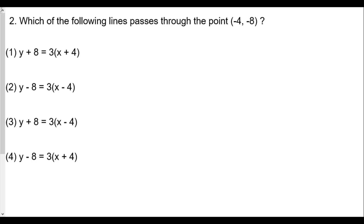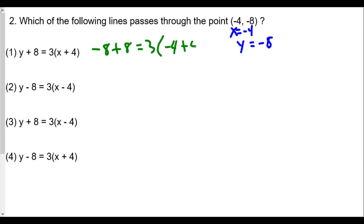Question two: which of the following lines passes through the point negative four, negative eight? We'll plug in x equals negative four and y equals negative eight into each equation and see which one balances — left side equals right side. Testing choice one: does negative eight plus eight equal three times negative four plus four? That gives zero equals three times zero, and zero equals zero, so this works out. Our answer is choice one.